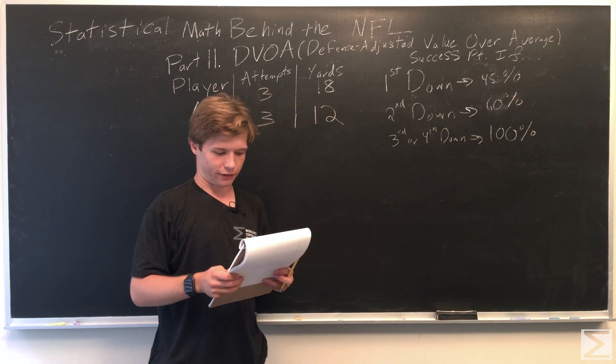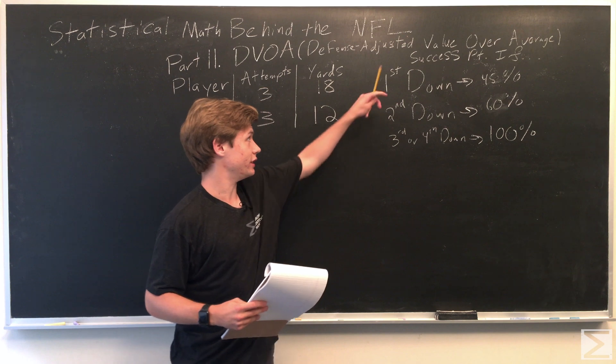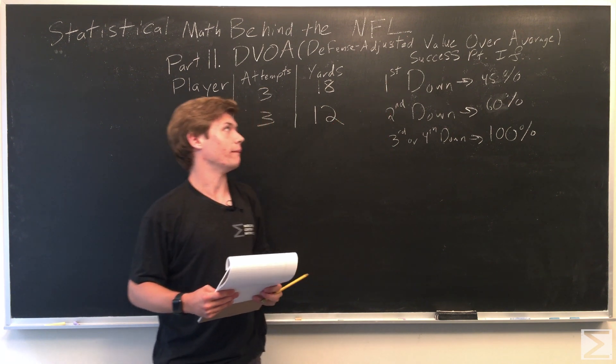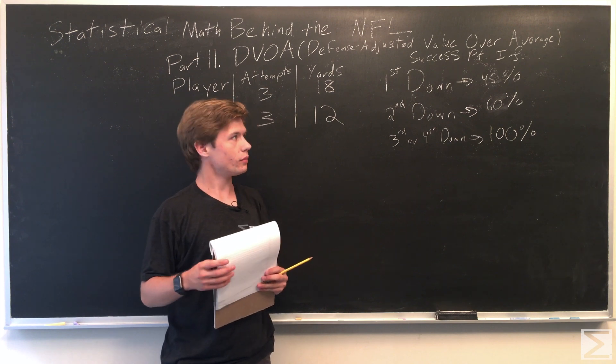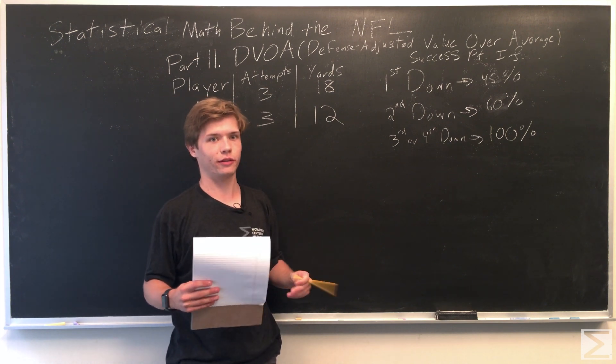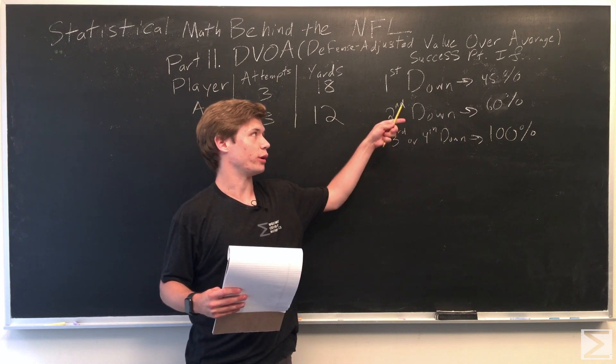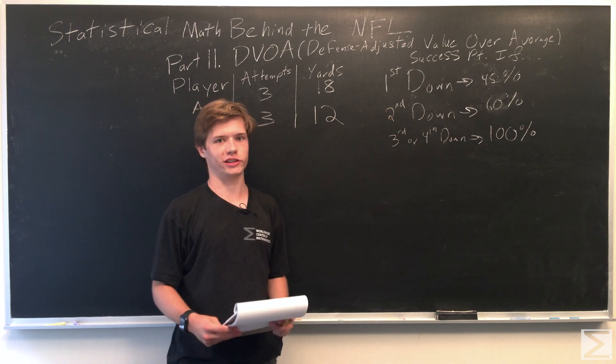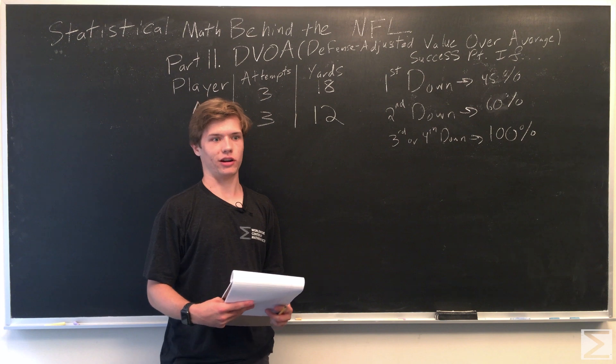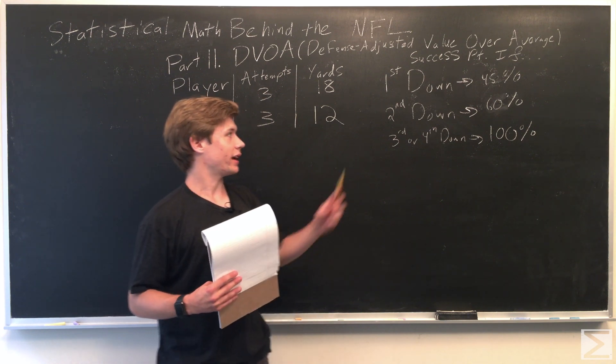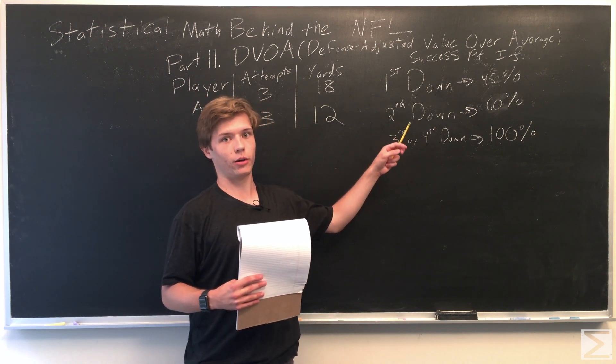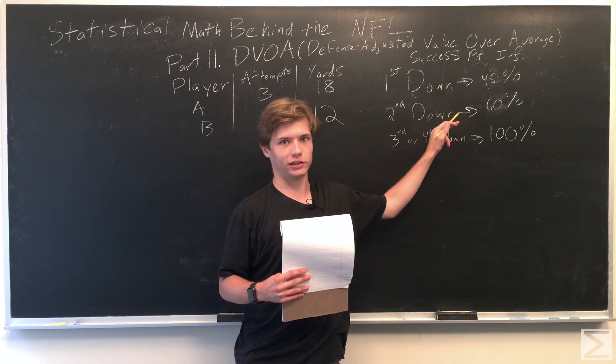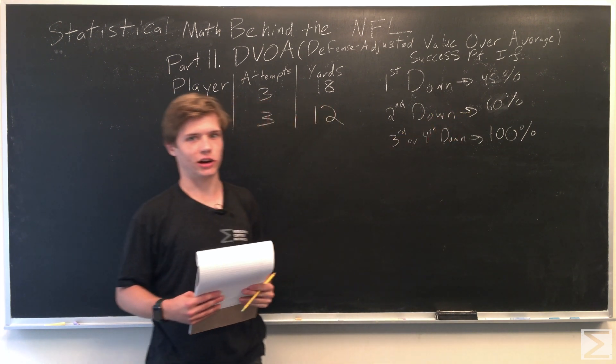So you can see these are the downs in football: first, second, third, or fourth. And so on first down, a play will be deemed successful if a player gets at least 45% of the yards on a play. So if it's first and 10, if you gain five yards, that's a successful play. Second down, since you have one fewer down, the standard goes up a little bit, so it's 60%. So second and 10, you would need six yards to get a success point.